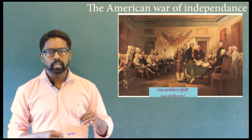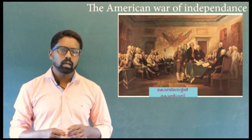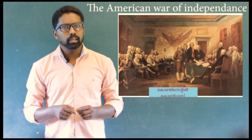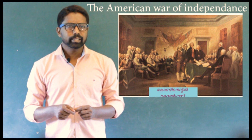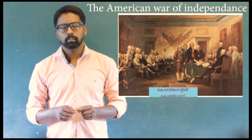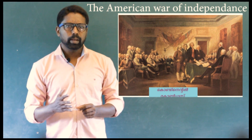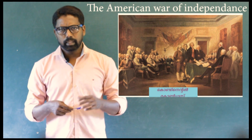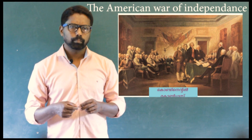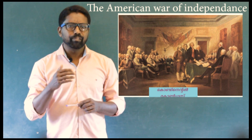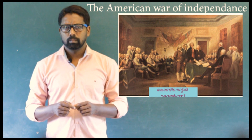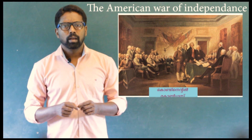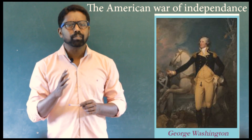The people of the colonies said that the King sent a military force to suppress the people. This led to the war between England and the colonies. In the Second Continental Congress held at Philadelphia in 1775, George Washington was elected as the commander-in-chief of the Continental Army.